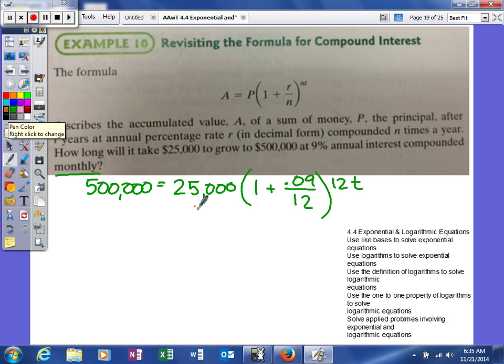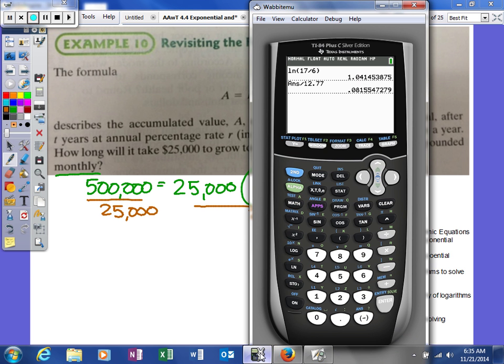First thing I'm going to do is divide both sides by $25,000. Even though I can probably do that in my head, it's early. So I get 20. Fantastic.